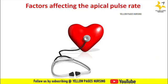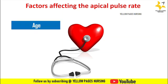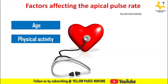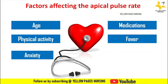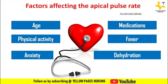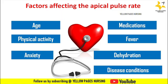Factors that can affect the apical pulse rate include: age — the rate typically decreases as a person ages; physical activity — exercise can increase the rate temporarily; anxiety — which can cause the rate to increase; medications such as beta blockers or digitalis; fever — an increase in body temperature can raise the rate; dehydration — a decrease in fluid volume can increase the rate; and disease conditions such as anemia, hyperthyroidism, or heart disease.